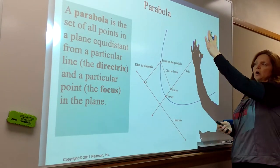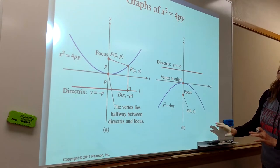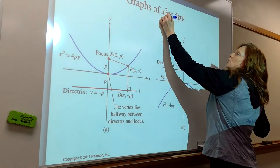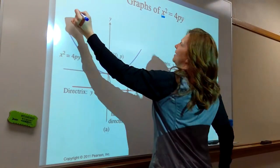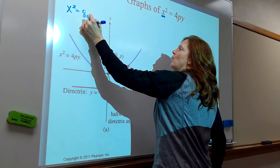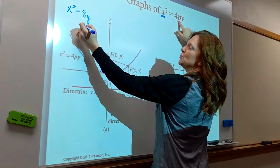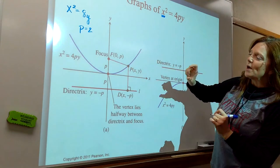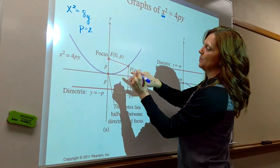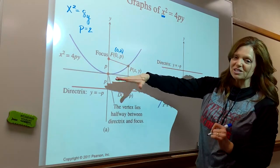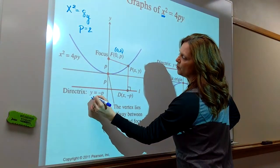Our parabolas are not going to open at an angle — they're either going to open up or down, or left or right. For ones opening up or down, the equation is x squared, so maybe x² = 8y. Then 4p = 8, so p = 2. The vertex is at (0, 0), the focus is at (0, 2), and since the directrix is on the other side — 2 units below the x-axis — the directrix is y = −2.